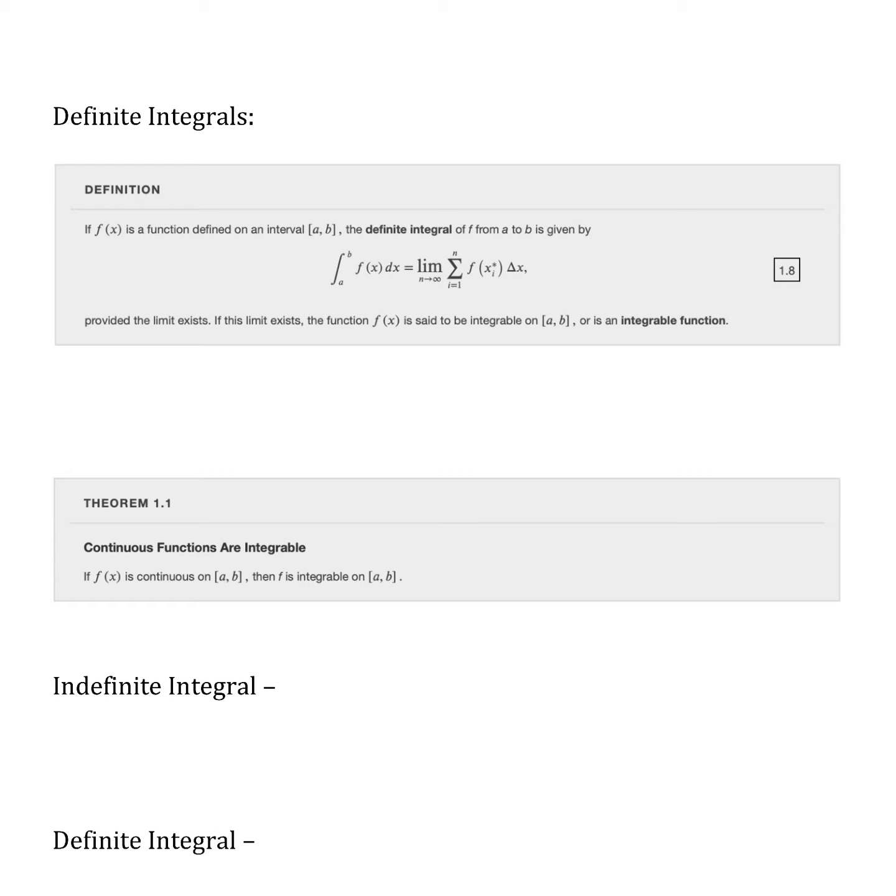In this video, we're going to take a look at definite integrals. We start with a definition from OpenStax where we've got a function defined on an interval. We're not looking at our function as a whole, we're looking at it from one number on the x-axis to another number. When we're talking about this interval, a is always going to be less than b, just like any time in interval notation.